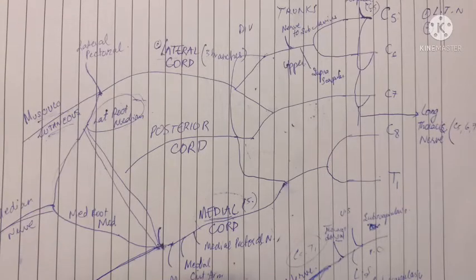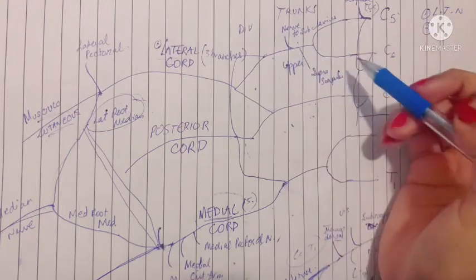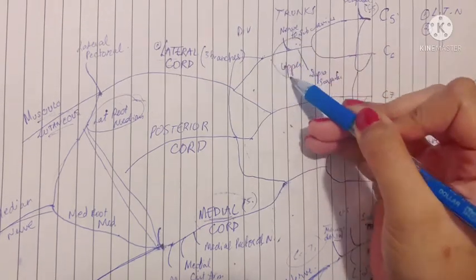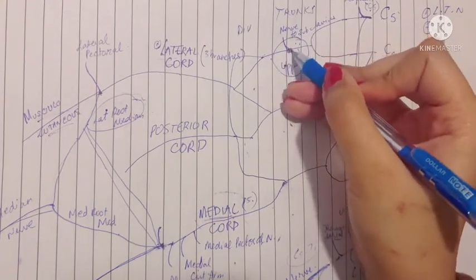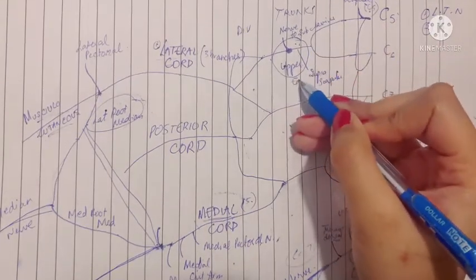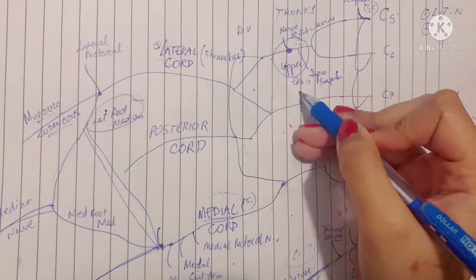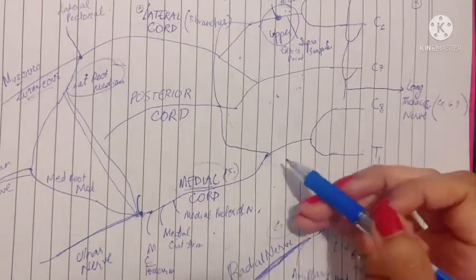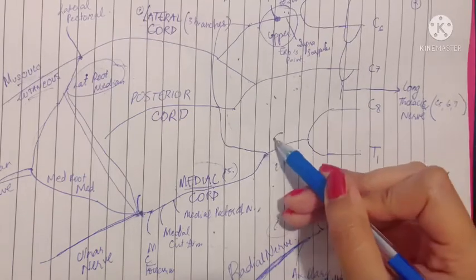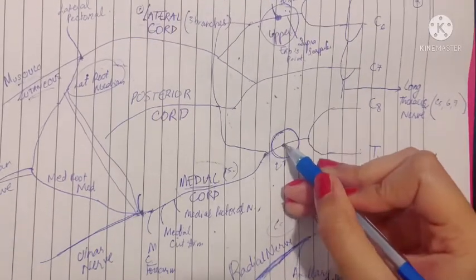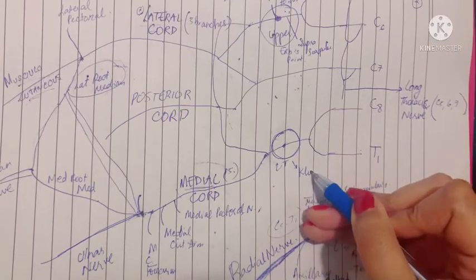There are two points of the brachial plexus that are vulnerable to damage. The first is the upper trunk, known as Erb's point. When this gets injured, it results in Erb's palsy. The second vulnerable part is the lower trunk of the brachial plexus. When this gets damaged, it results in Klumpke's paralysis.